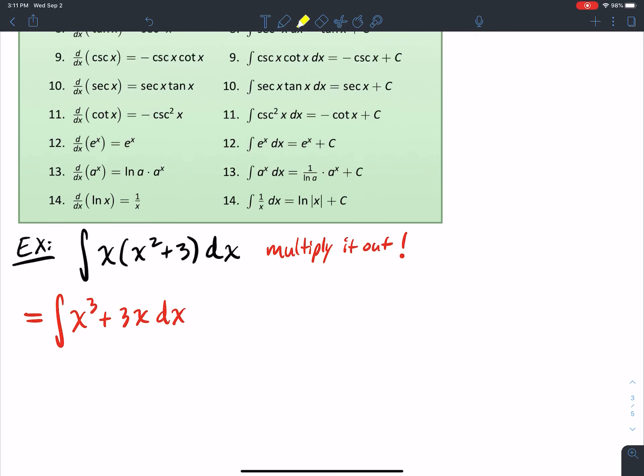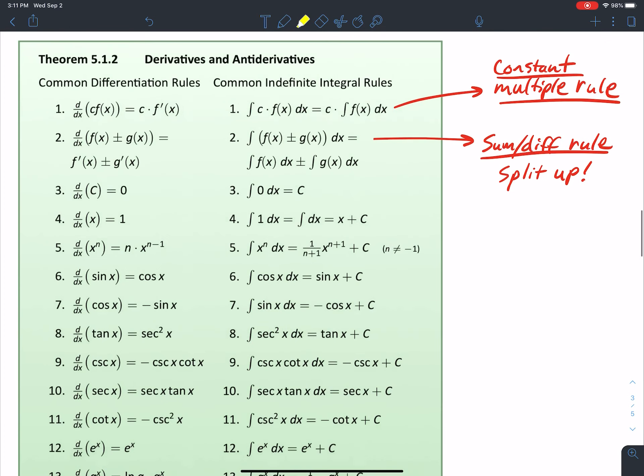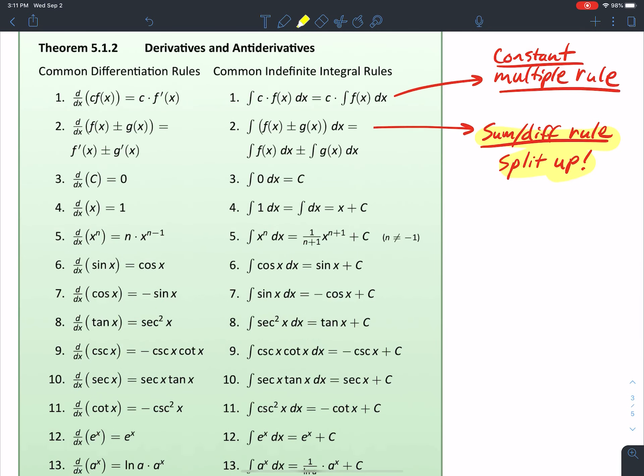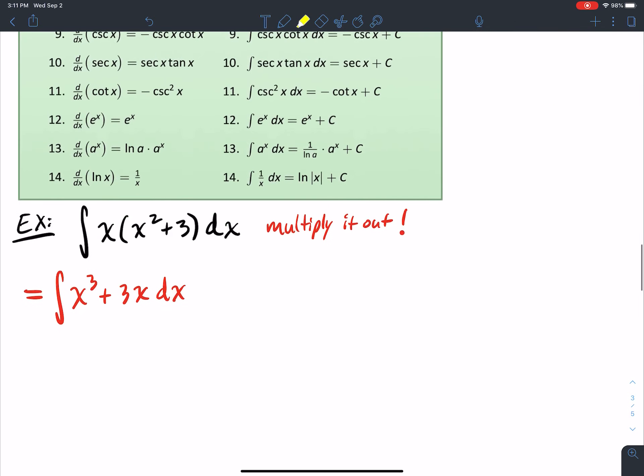Now, I can use my constant multiple rule and my sum and difference rule. How so? I see a sum here. I'm going to break this up into two integrals. And so when I break this up into two integrals, I can integrate the pieces individually.